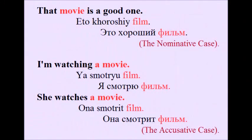Now let's think about what sentence we could make up with the noun 'movie' but putting it in the nominative case. It's easy — when we name something, we should use the nominative case. For example: that movie is a good one. Это хороший фильм. In this sentence the same word 'movie' is used in the nominative case.